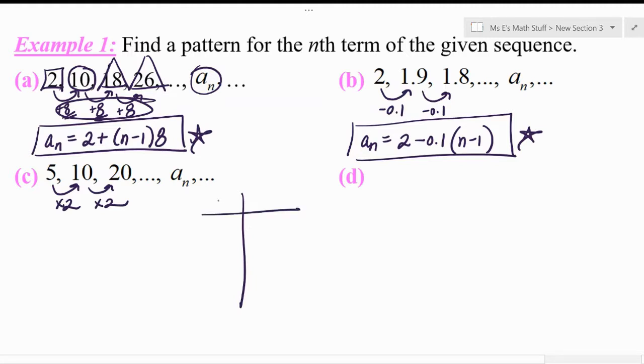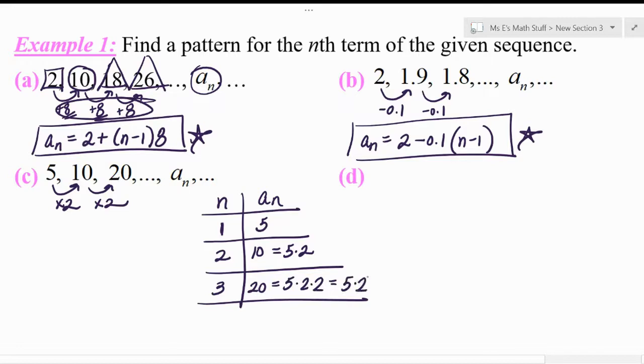So part C has a pattern, but it's just different from A and B. So let's see. Maybe I'll go back to the T table. So this is the number of term you're on, and then this is how you could get there. First term, well, that's just 5. And then to get to the second term, which is 10, what did you do to the 5 to get there? Well, you took the 5 and you multiplied it by 2, right? So to get to the third term, which is 20, you could think of it as taking the previous term, which is 5 times 2 and multiplying it by 2. Or you could think of it as taking the first term and multiplying it by 2 times 2, which, by the way, is like 5 times 2 squared.